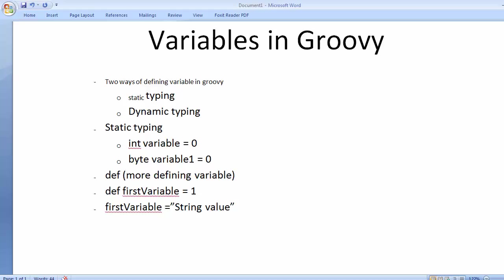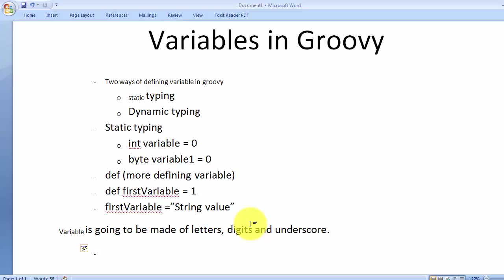There are also certain rules to follow when creating variables. Variables can be composed of letters, digits, and underscores. One important rule is that any variable name must start with a letter or an underscore. These were the theoretical points — now let's get back to Eclipse to see the practical aspect of these variables.